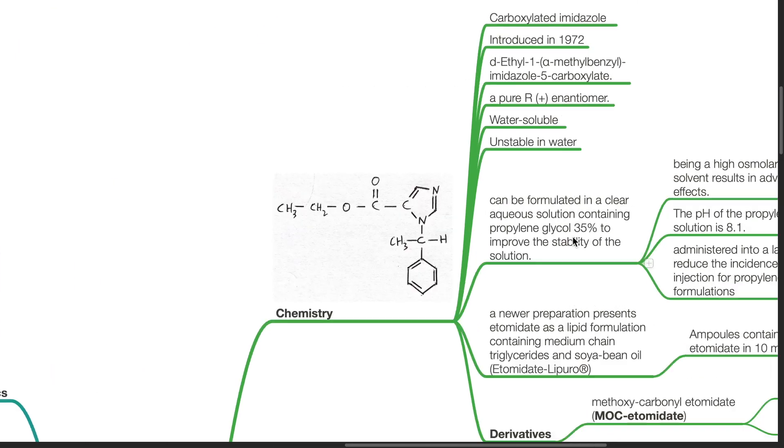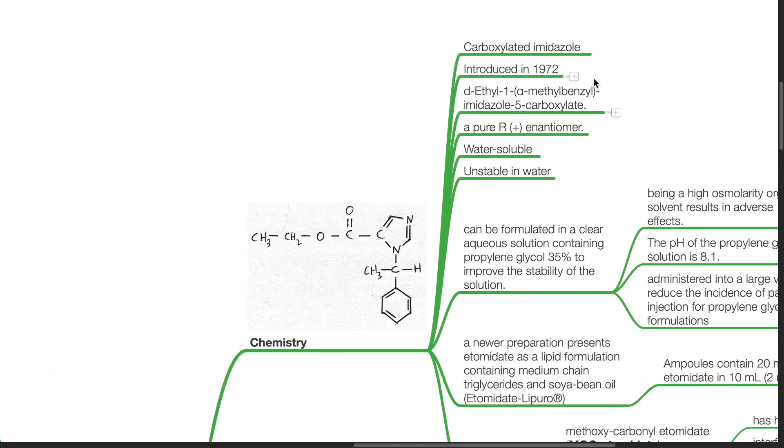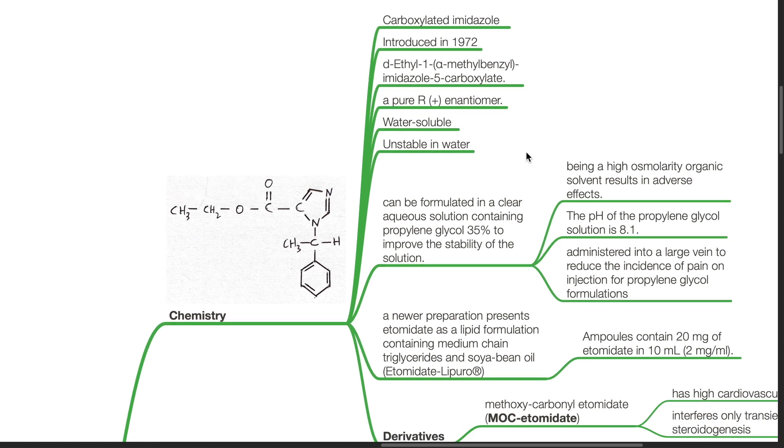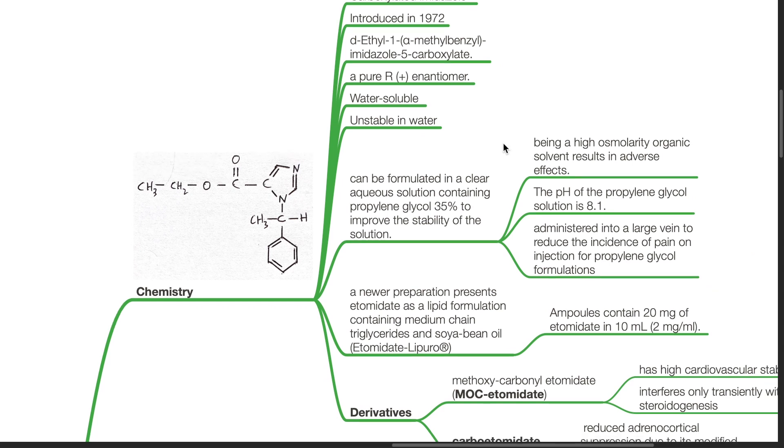Chemistry of etomidate: It is a carboxylated imidazole introduced in 1972. The chemical name is D-ethyl-1-alpha-methylbenzyl imidazole-5-carboxylate. It is a pure R-dextro-enantiomer which is water-soluble but unstable in water. It can be formulated in a clear aqueous solution containing propylene glycol 35% to improve the stability of the solution.